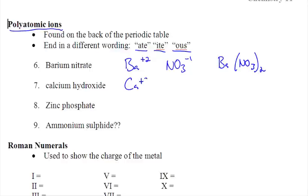Calcium hydroxide is Ca plus two. Hydroxide, look on the back of your periodic table. It's a minus one. Again, you need two hydroxides to cancel off that plus two charge of the calcium. So Ca(OH)2. Brackets around the OH to show that you need two of the OHs.